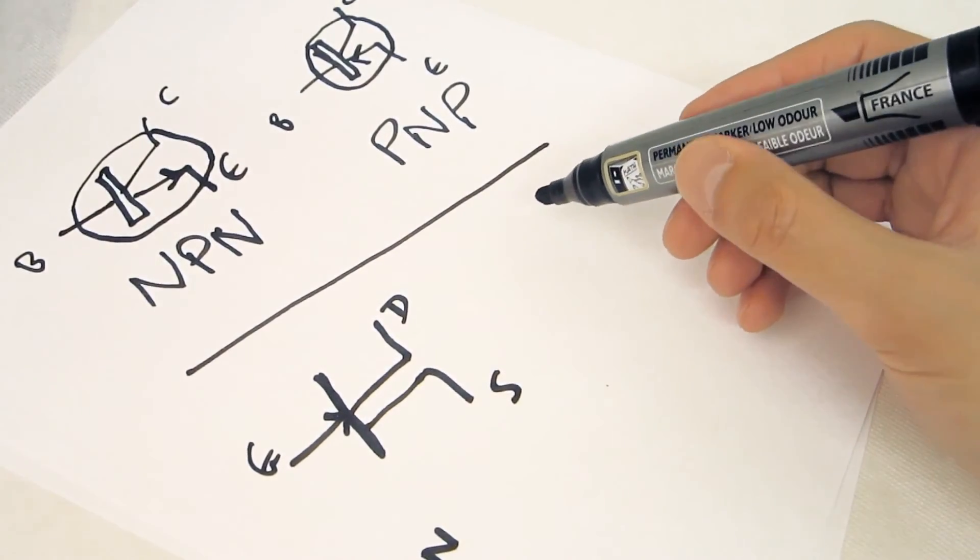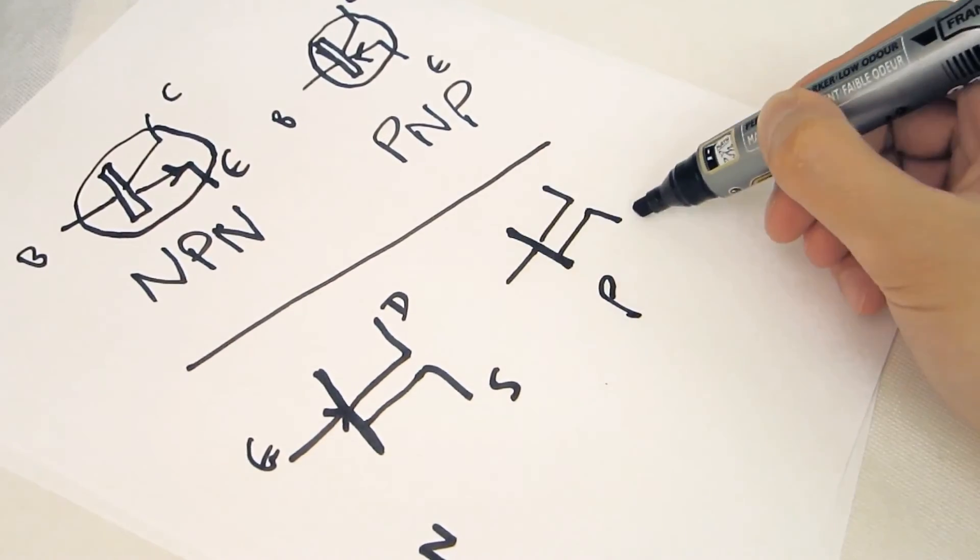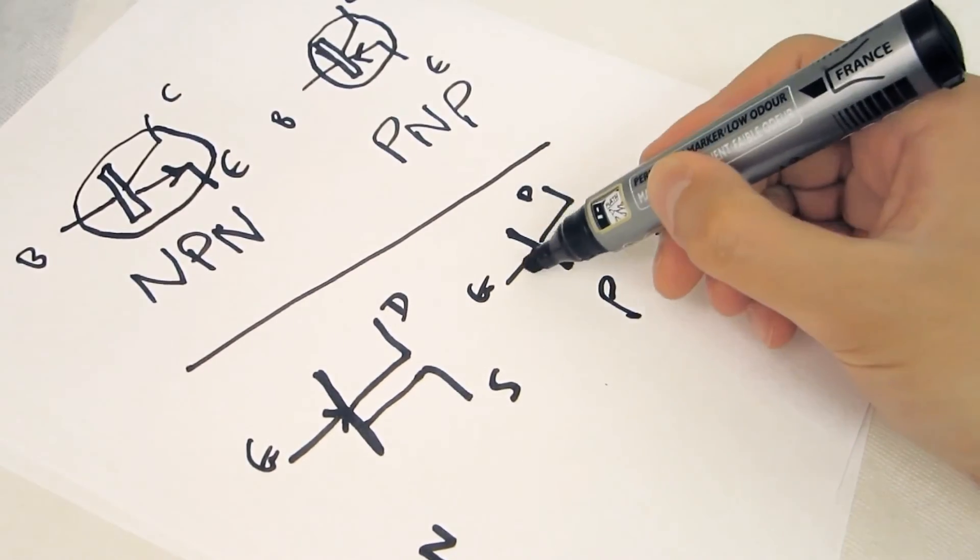And we have the P channel, which looks like this. The source, the drain, the gate, and of course the arrow.